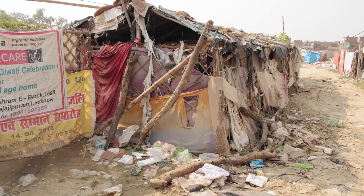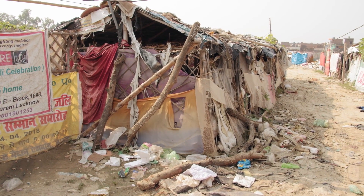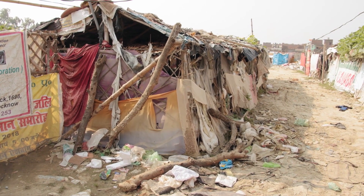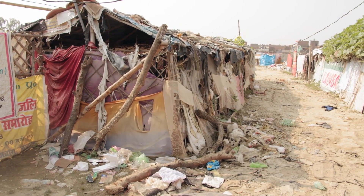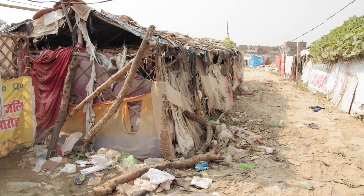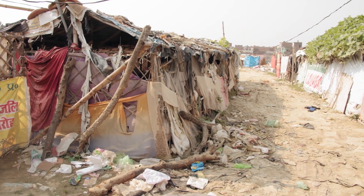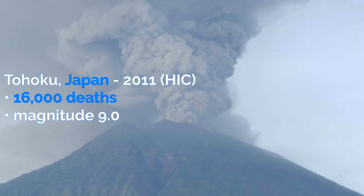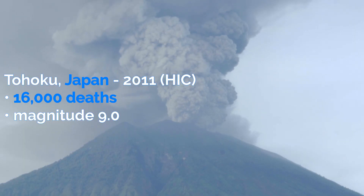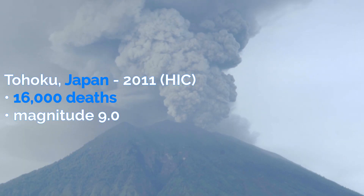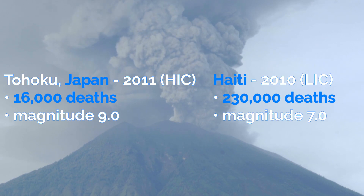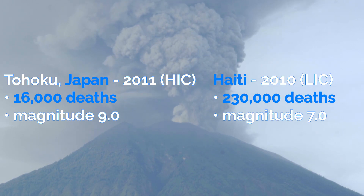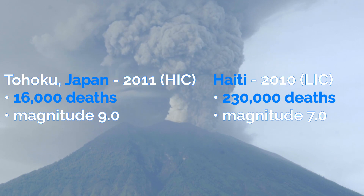In less developed areas of the world, people often construct their homes themselves, which means they are poorly structured and easily damaged by hazards. This means when hazards occur more people are likely to be badly affected. For example, the 2011 Tohoku earthquake in Japan caused around 16,000 deaths, whereas the lower magnitude 2010 earthquake in Haiti caused a much larger 230,000 deaths.